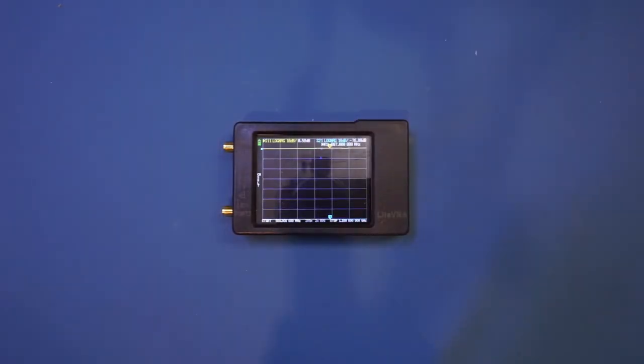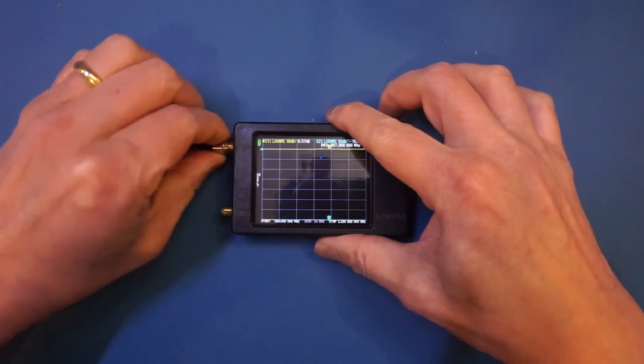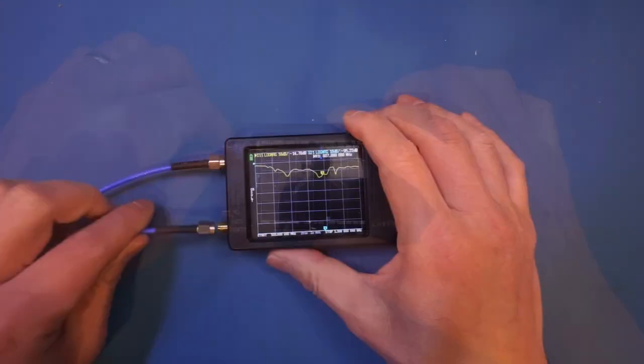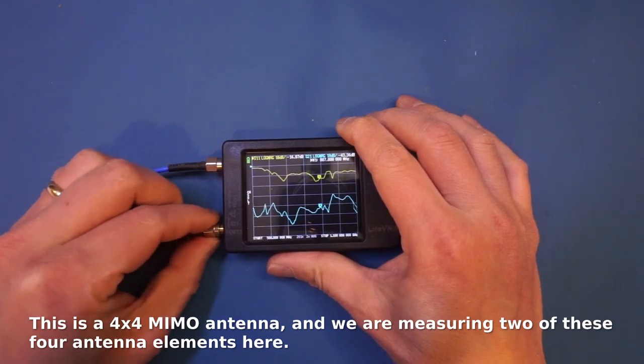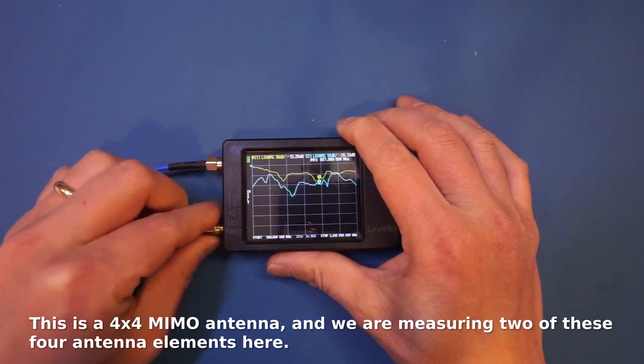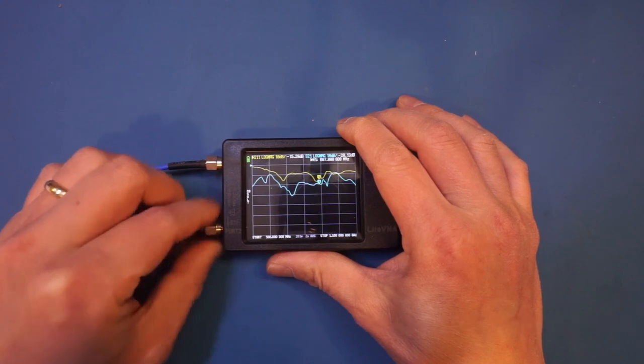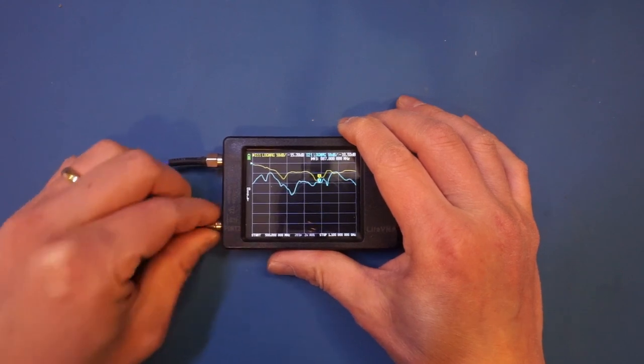To save some time, I've already done my calibration. So now let me hook up the antenna to the nano VNA here. By the way, I'm hooking up two antennas to this Light VNA and I wanted to see the cross-channel isolation characteristics as well.